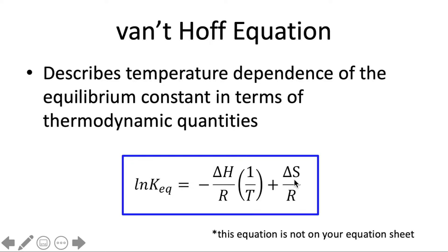Now what about entropy? If our products are more ordered than the reactants that will mean delta S is negative so we'll have a negative y-intercept. And if our products are more disordered than the reactants then we should have a positive delta S and a positive intercept.